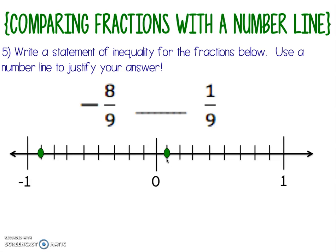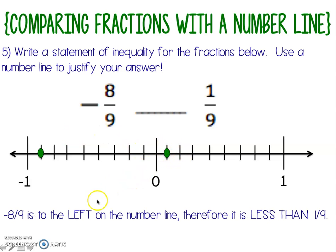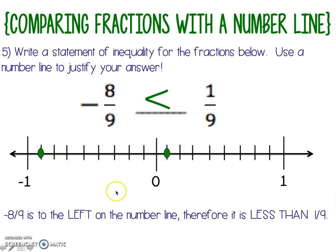Negative eight ninths is to the left of one ninth, and anything to the left on the number line means that it is less than — the further to the left, the smaller the numbers get. So our final answer is negative eight ninths is less than positive one ninth. For the remaining questions, you're going to create your number line, plot the two values, and then determine using the number line whether it's less than, greater than, or equal to.